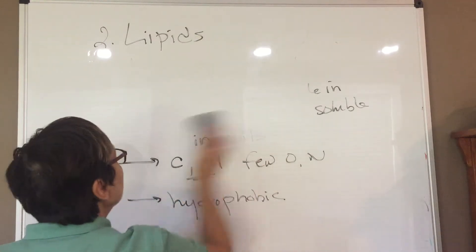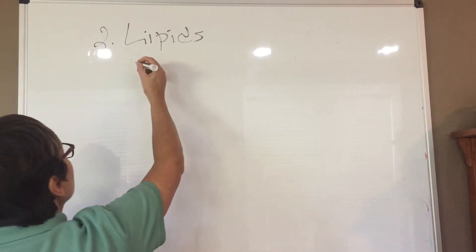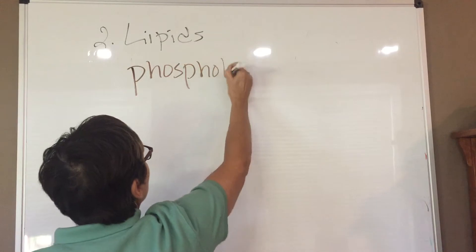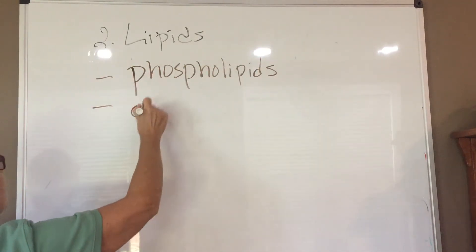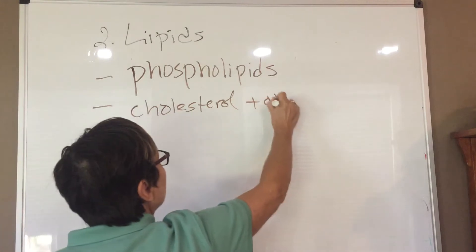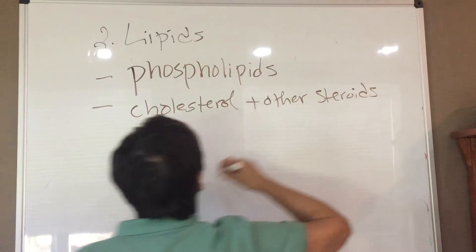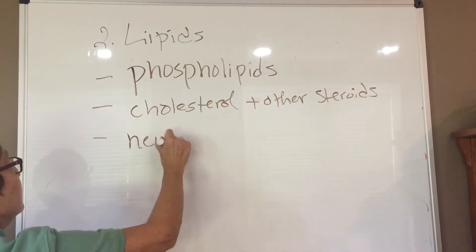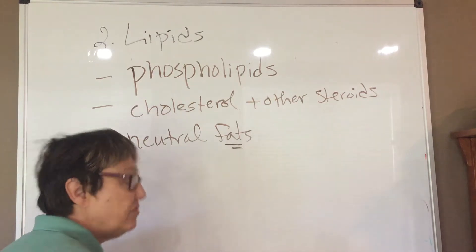The lipid group includes phospholipids, cholesterol and other steroids, and neutral fats — you might hear those simply referred to as fats. Those are the three main types we'll talk about.